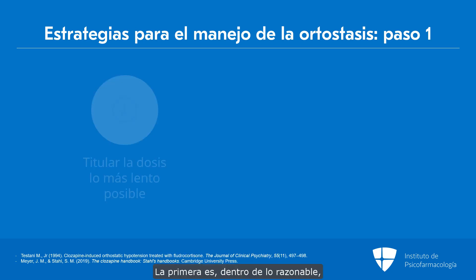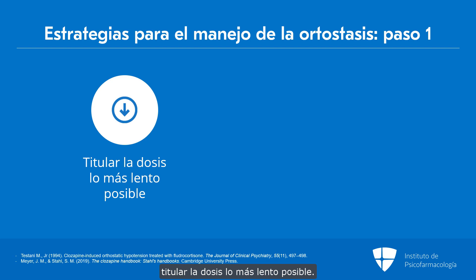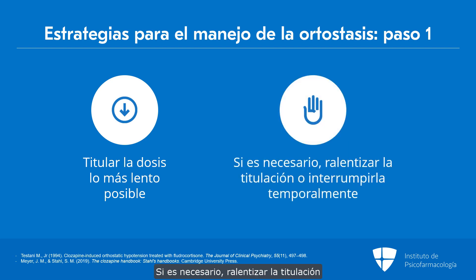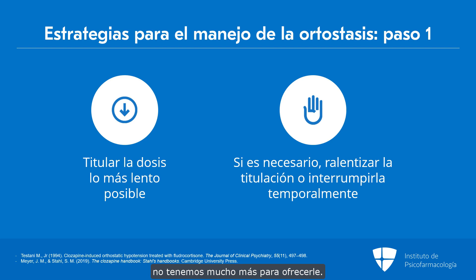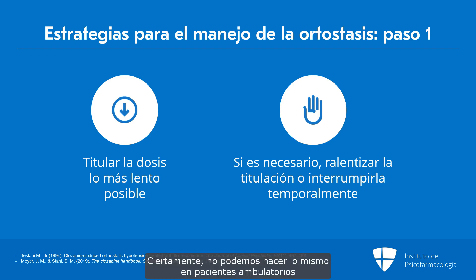Number one: use the slowest titration that seems reasonable. If needed, slow the titration or even pause it temporarily. If the patient says they don't want to take this medicine anymore, you have very little else to offer them if they're treatment-resistant. Don't be in a hurry. There are studies of fast titrations done in an inpatient setting, but certainly you cannot do that as an outpatient, and even many inpatients will not tolerate that either.